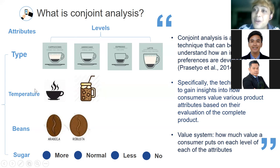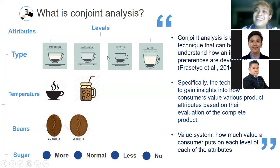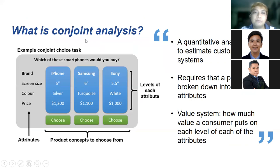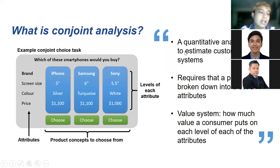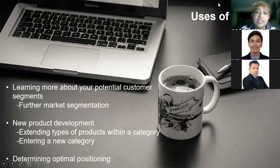You will see which level of each attribute is best — the type, the temperature, the beans, the sugar. And not just that: you will know the level of importance among these attributes. Which one is more important? For me, the most important is the type, and the second is the beans. But how do we know for sure? That's what conjoint analysis tells us. No matter what kind of marketing analysis you do, conjoint is very powerful, and many people in industry don't know about it.